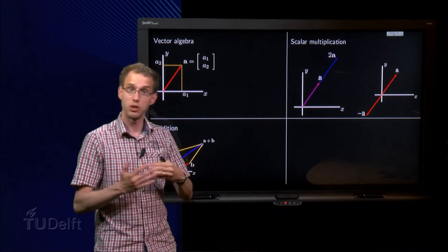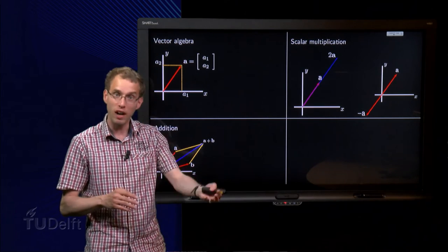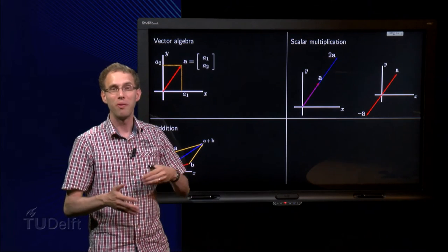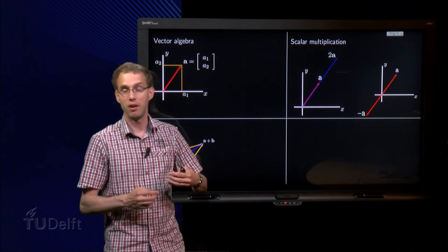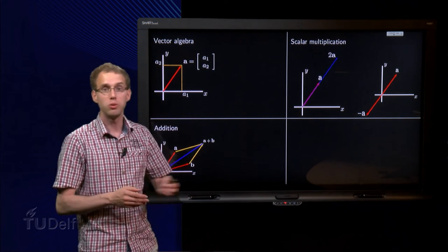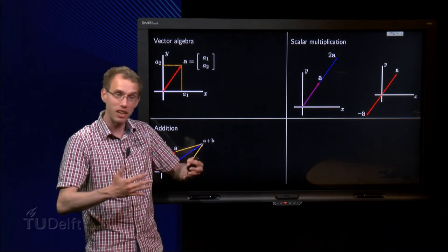Well if you have A, how do we get 2 times A? Well you go in the same directions, but twice as far. Well this probably makes sense, because if you want to know 2 times force, you just have twice the force in the same direction, but twice the amount.